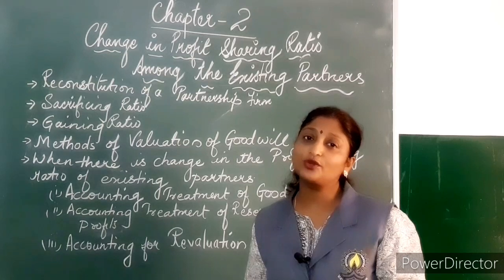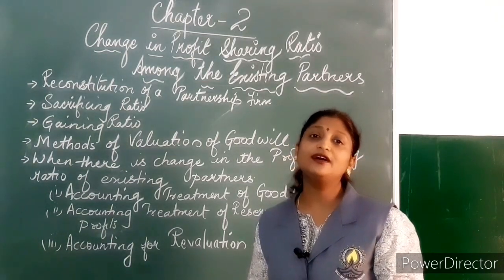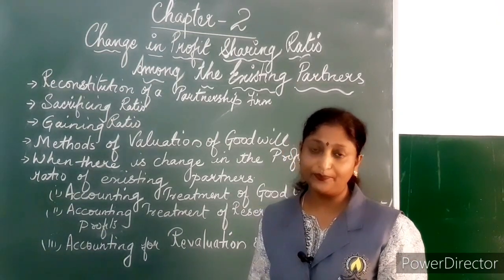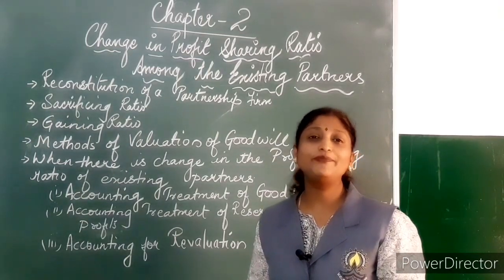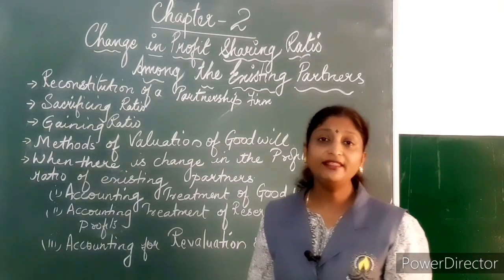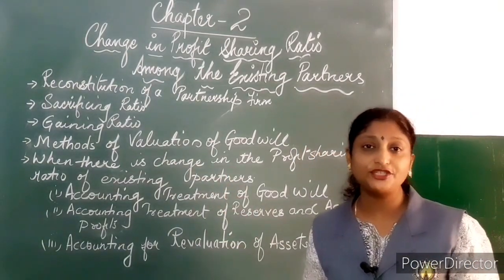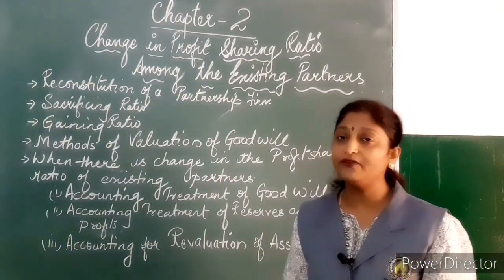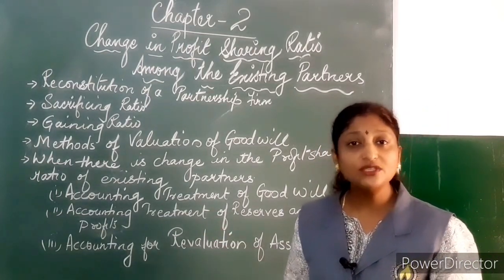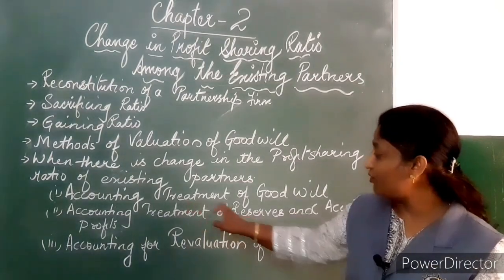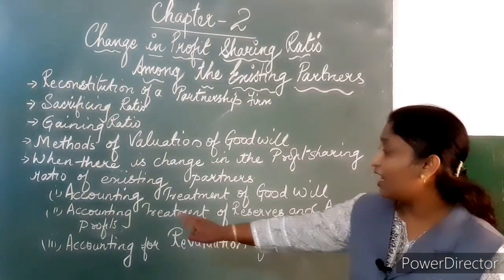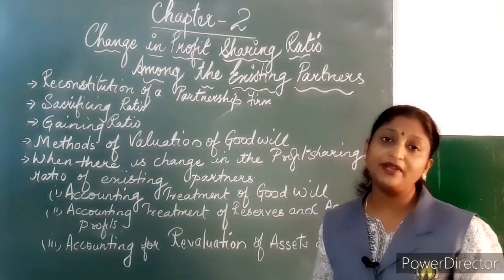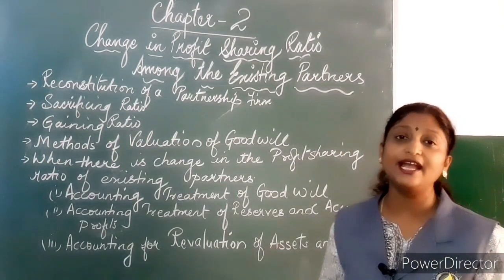We will also cover methods of the valuation of goodwill — its meaning — and there are almost three methods to calculate goodwill, which we shall learn in detail. The last topic is when there is a change in the profit sharing ratio among the existing partners, under which we will deal with three accounting treatments: accounting treatment of goodwill, accounting treatment of reserves and accumulated profits, and accounting treatment for revaluation of assets and liabilities.